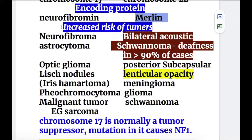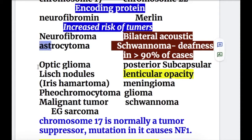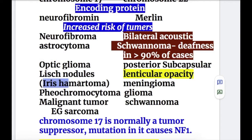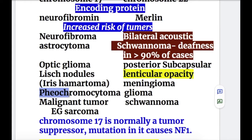There is an increased risk of tumors in both NF1 and NF2. In NF1, there may occur neurofibromas, astrocytomas, optic gliomas, and Lisch nodules — iris hamartomas that occur specifically in neurofibromatosis type 1. Pheochromocytoma also occurs in type 1.